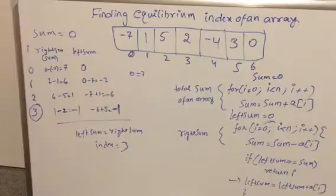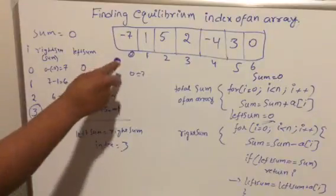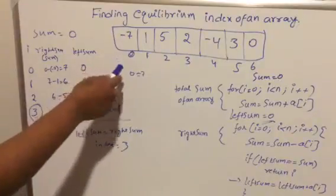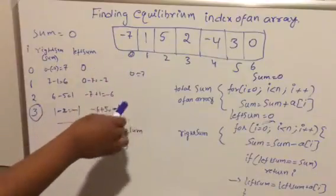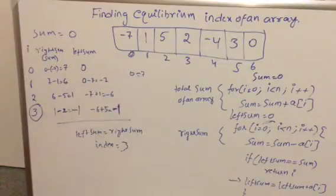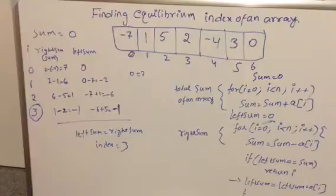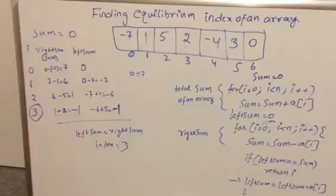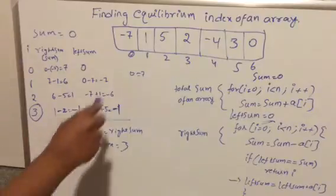One approach is to iterate through the array using two nested loops, checking every element. The time complexity for that approach is O(n²). A better approach is to first take the sum of all the elements in the array.